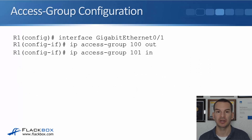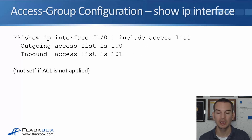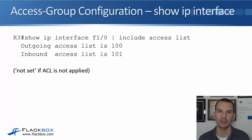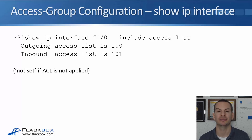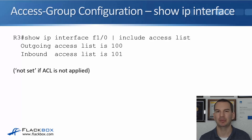To configure an access group, you go under the interface. For example, under interface GigabitEthernet 0/1, you can say 'ip access-group 100 out' and 'ip access-group 101 in'. To check which access lists are applied to which interfaces, it's easiest to do a 'show running-config'. There's not a really good show command for this, but you can use 'show ip interface' followed by the interface number, and pipe it to 'include access-list'. Generally though, a 'show run' scrolled to the interfaces section is easier.